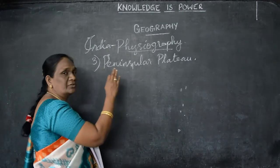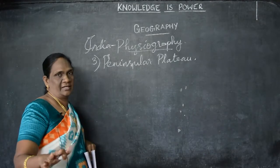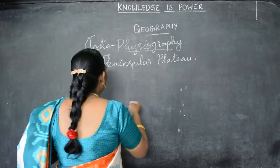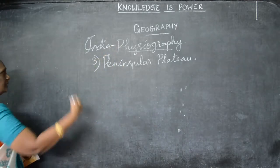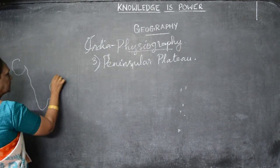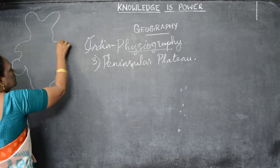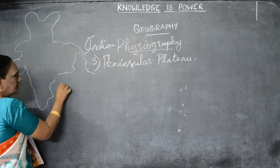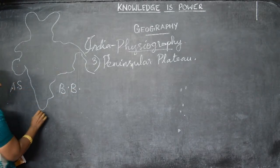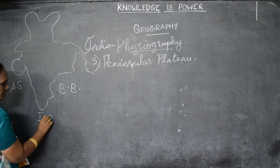This Peninsula Plateau is a rocky, hilly region — it is not level land. This Peninsula Plateau is in the south of the Indian Great Plains. To the east is the Bay of Bengal, to the west is the Arabian Sea, and to the south is the Indian Ocean.